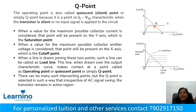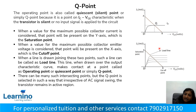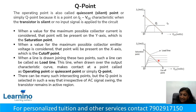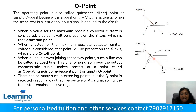The load line marks the Q point. When the load line is drawn over the output characteristics curve, it contacts at a point called the Q point. The Q point is selected in the middle region of the load line, between the saturation and cut-off points, such that with the AC signal swing, the transistor remains in the active region.